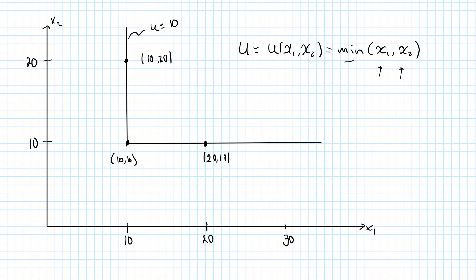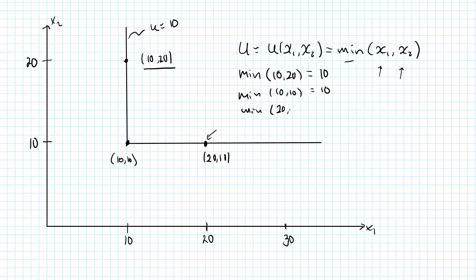This function min takes two numbers and will always return the smallest of these numbers. That means, for example, that the min of the bundle (10, 20) is 10 — the smallest one. The min of the corner bundle (10, 10) is 10 as well, and the min of the bundle (20, 10) is also 10.